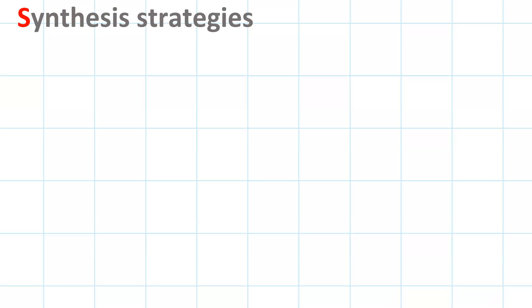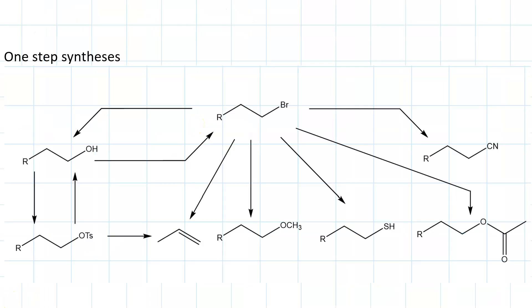Synthesis strategies for substitution and elimination reactions. We need to understand the reagents and outcomes for one-step syntheses. Starting off with the primary alkyl halide, you can make all of these different products shown.